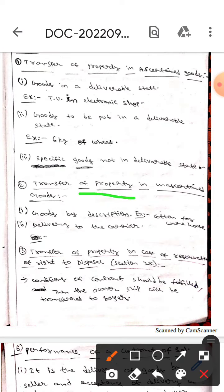Whereas the next one is transfer property in unascertained goods. Here goods by description. Example like cotton for warehouse.